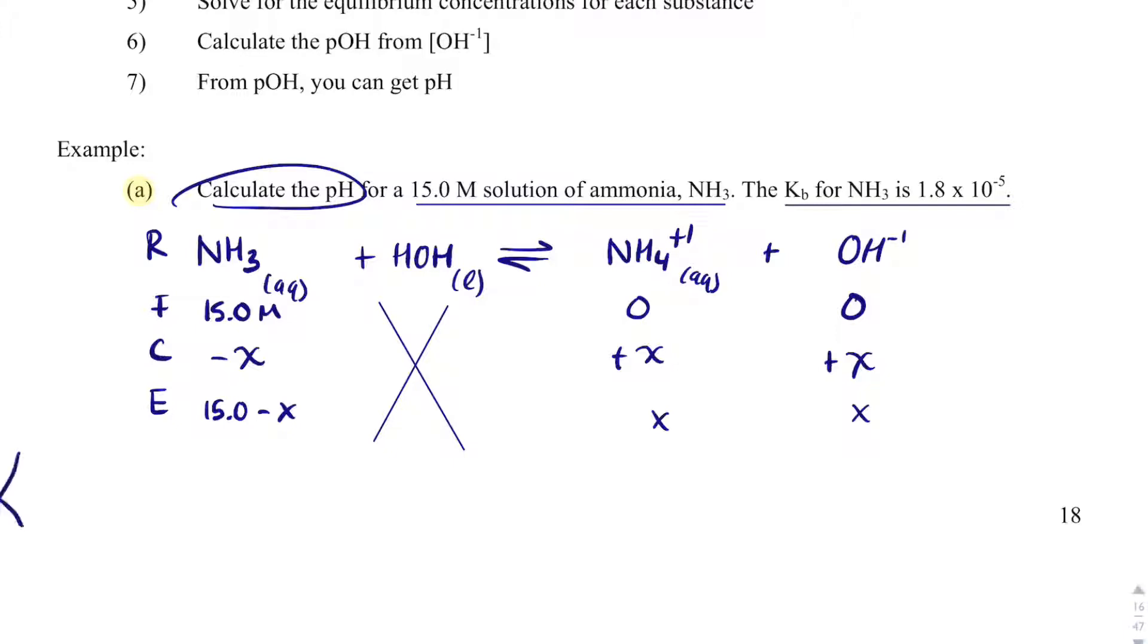And here, I'm going to write my K expression, and it is in fact a Kb. I did produce hydroxide, so this is NH4 plus 1 OH minus 1 divided by NH3. What that will give me is X times X divided by 15 minus X. And that will equal my Kb, which is 1.8 times 10 to the minus 5.